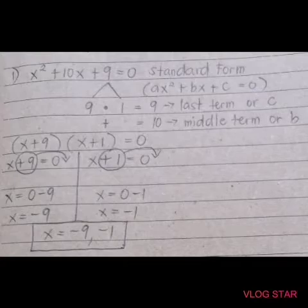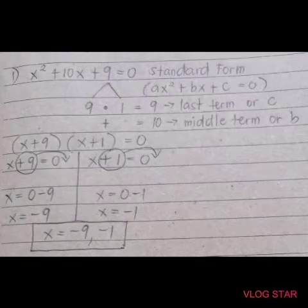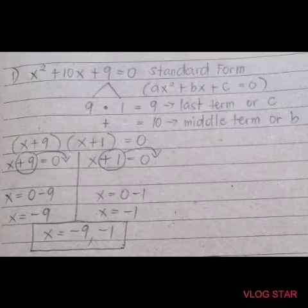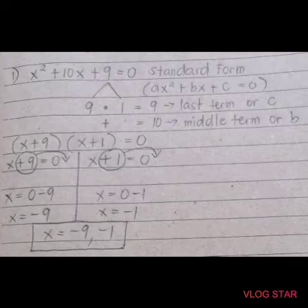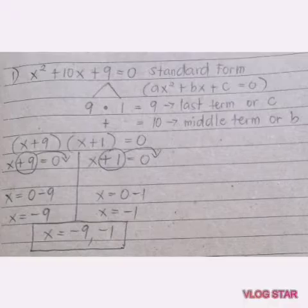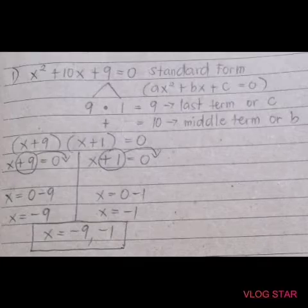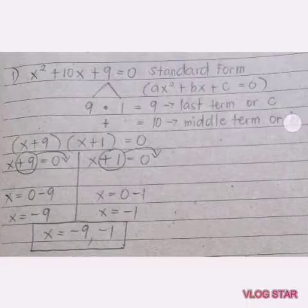The given here is x squared plus 10x plus 9 equals 0. We have to think of factors that, if you multiply them, will give you positive 9 — the last term, or c. And then if you add those factors, 9 and 1, it will give you the middle term, or b.